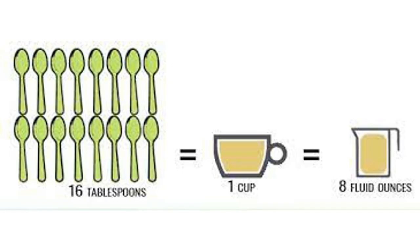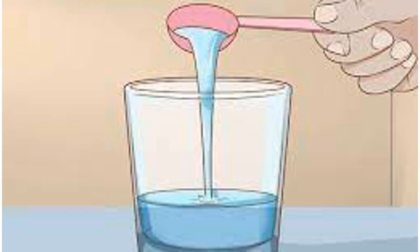Work out how many tablespoons you will need. An easy way to do this is to remember that one cup equates to 16 tablespoons. For example, if you need half a cup, you would require eight tablespoons of fluid. Measure your liquid over a vessel and pour slowly and steadily to avoid excess spillage. Fill your tablespoon with the liquid, transfer to the vessel, and repeat until you have measured the amount you need.